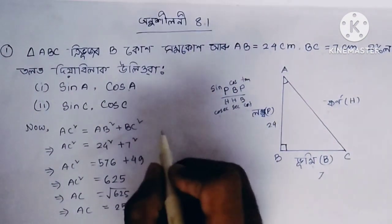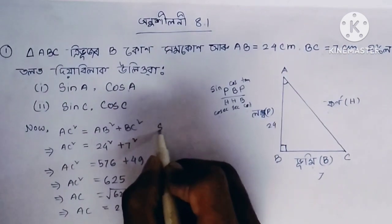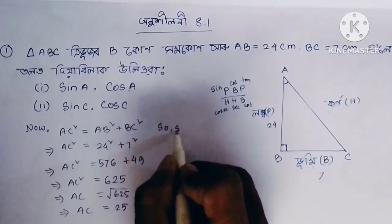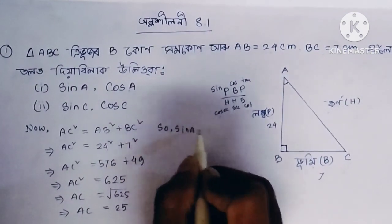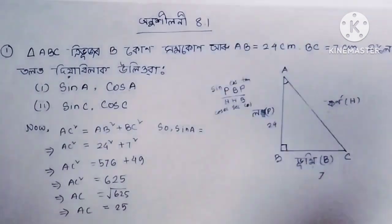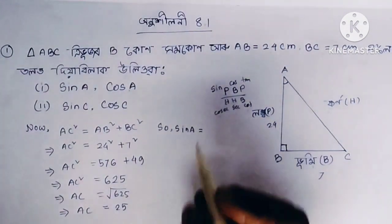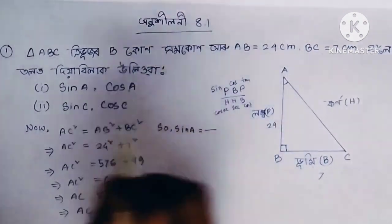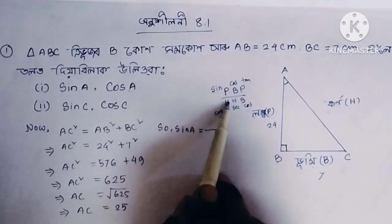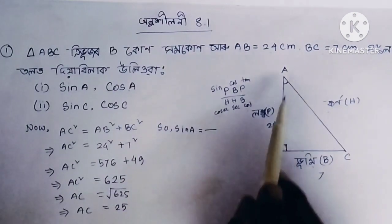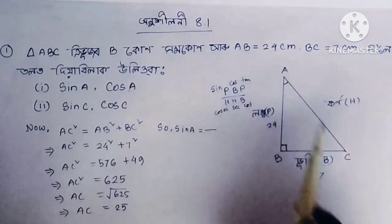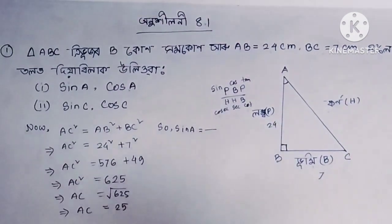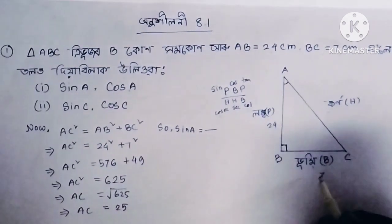So for sin E, if we have angle E and want to find sin E — sin E equals P by H. P means perpendicular. If angle A is our reference angle, then the perpendicular side is identified and hypotenuse B is the other side.